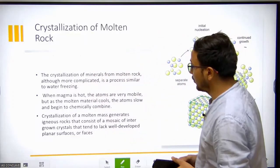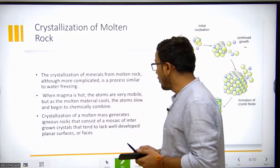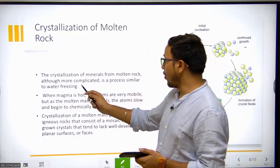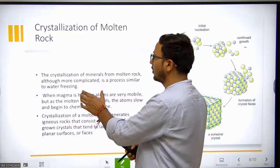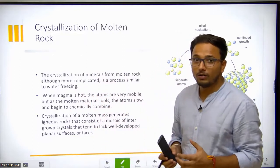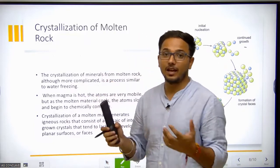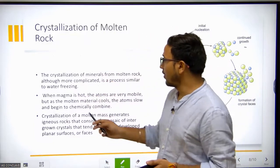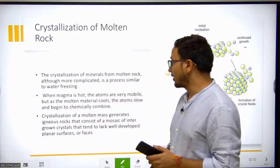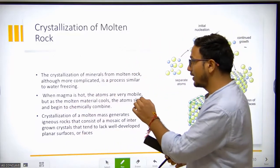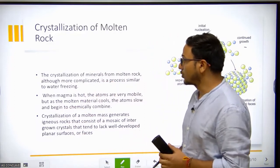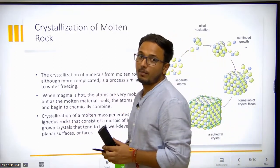How rock form, how minerals form through the crystallization. In this process, the crystallization of minerals from molten rock, although more complicated, is a process similar to water freezing. Water freezes into ice and forms a crystallized structure. When magma is hot, the atoms are very mobile, but as the molten material cools, the atoms slow and begin to chemically combine.